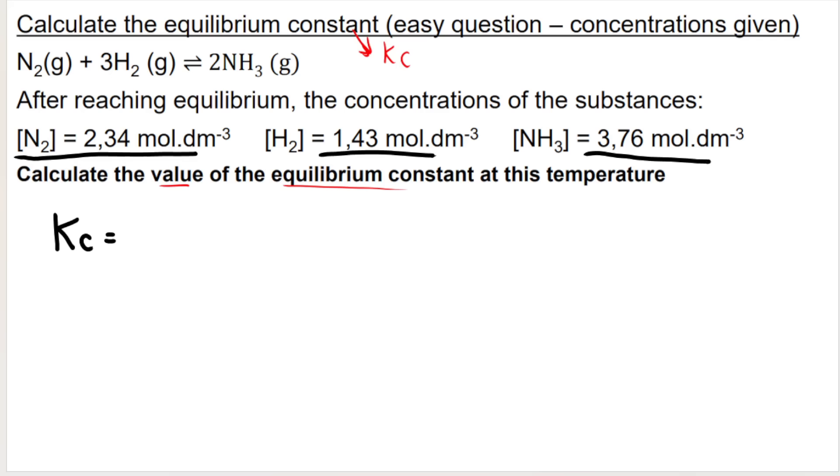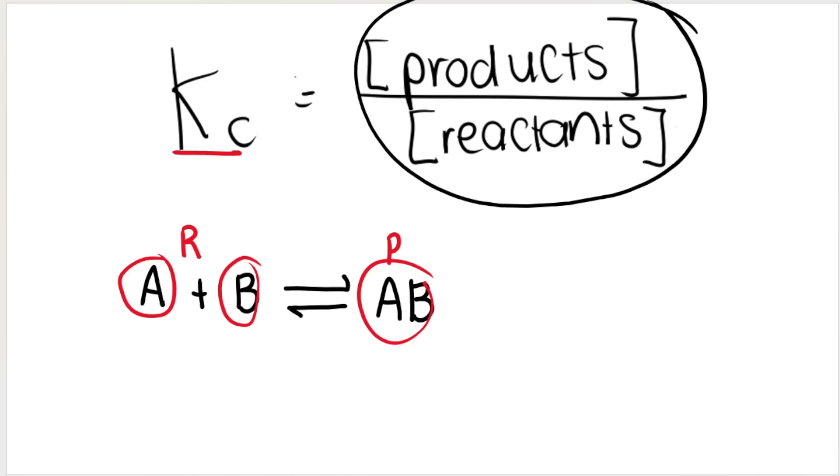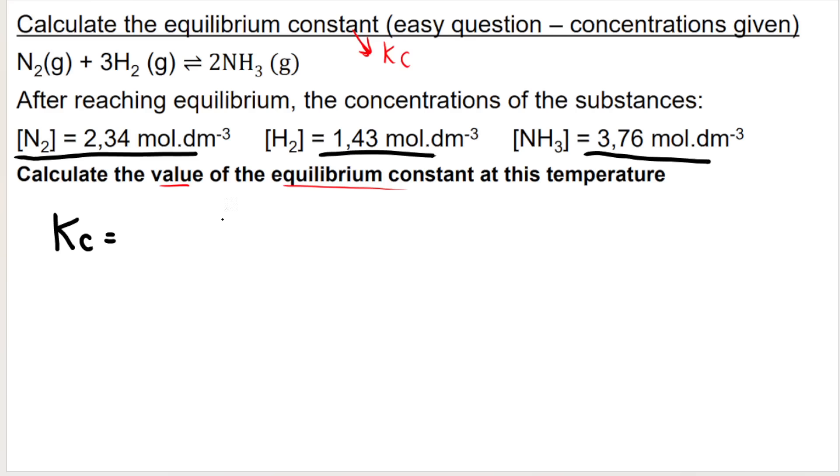You would have done Kc is equal to. Now, remember, you may start off by saying Kc is equal to concentration of products over concentration of reactants. So maybe you wrote that out here. That's perfectly fine, but you don't get a mark for it. What you do get a mark for is writing the Kc expression for this particular equation.